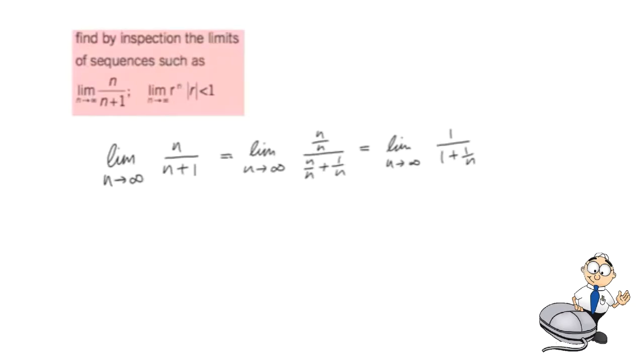Now this 1 over n, let's consider the value of this as n goes to infinity. What is the value of 1 over infinity, or 1 over a very huge number? This is going to be something very small. 1 divided by something very big is going to approach 0. So the answer to the limit is 1 over 1 plus 0, which is just 1.